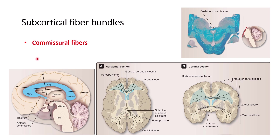The second type is called commissure fibers. These commissures connect the two cerebral hemispheres. The first one is a small one called the anterior commissure, which connects the two temporal lobes.